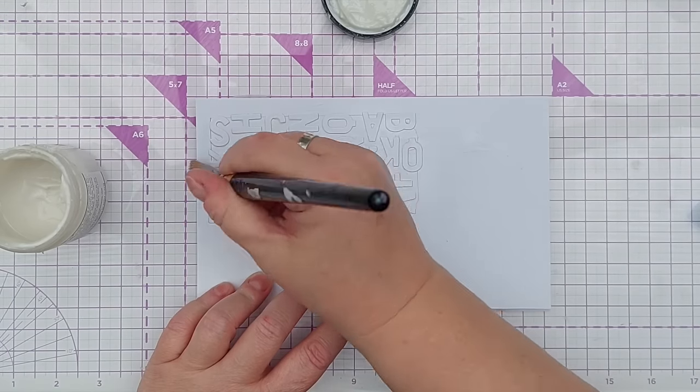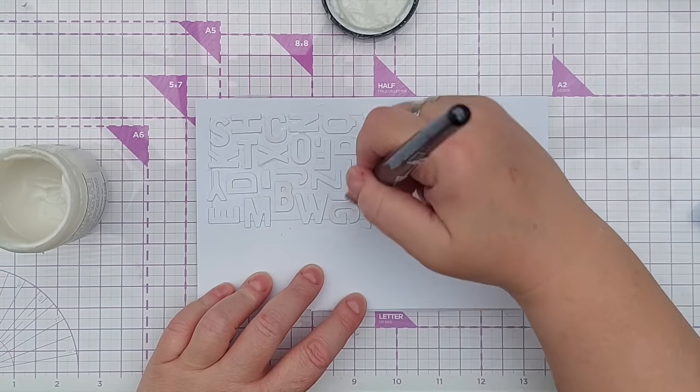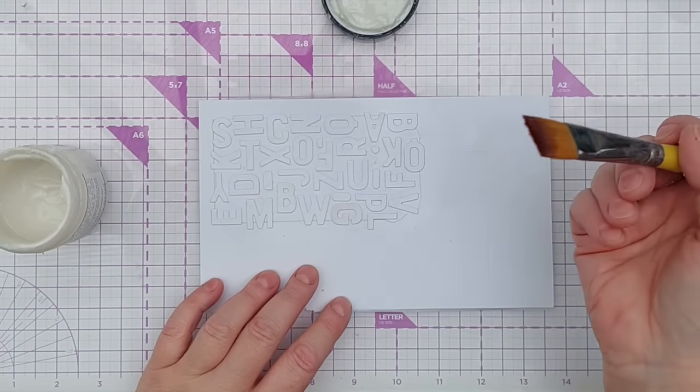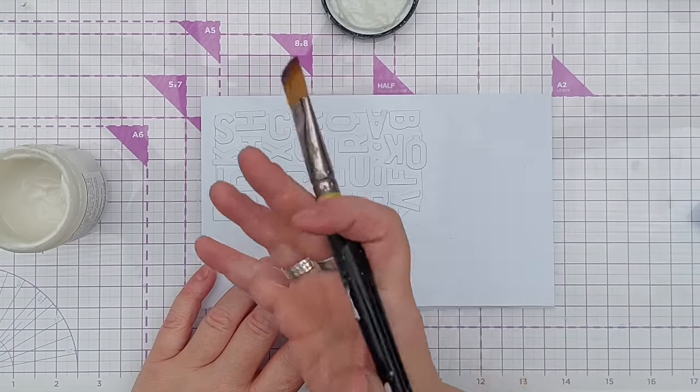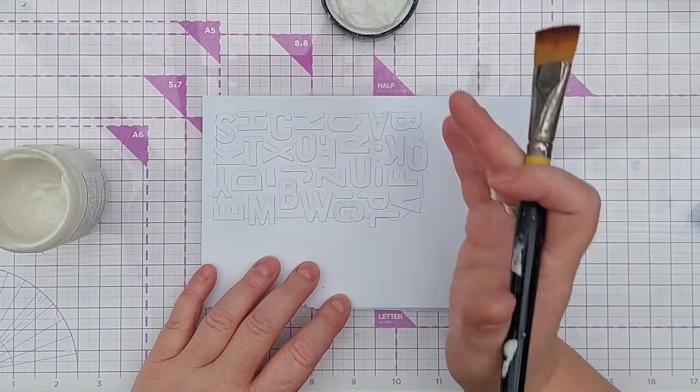This will just unify the texture because some of these bits will have glue on them and some of them will be just paper. And when I do the next stage, the coloring stage, I want the color to adhere to everything the same if you see what I mean.